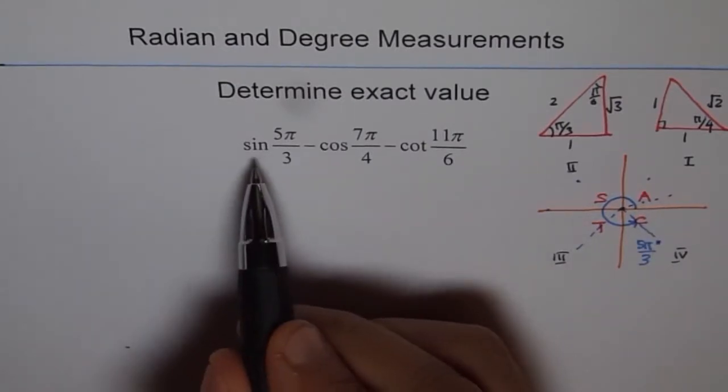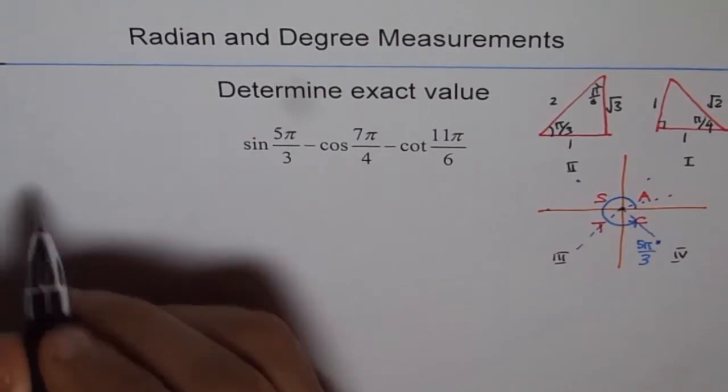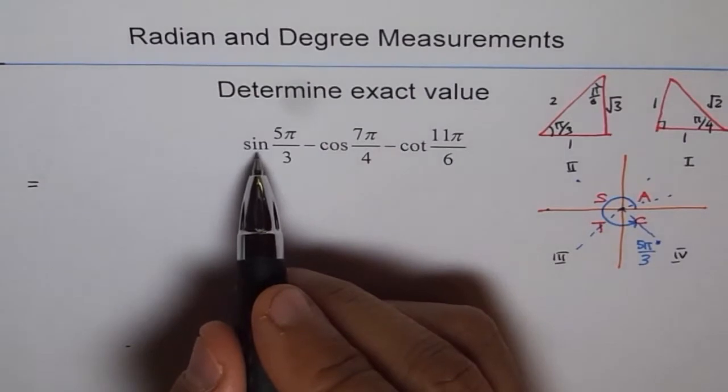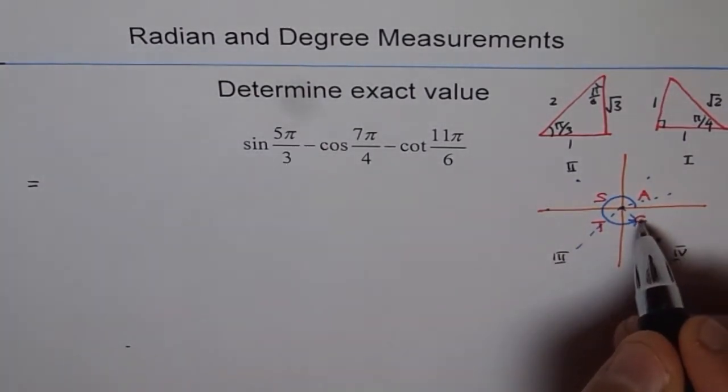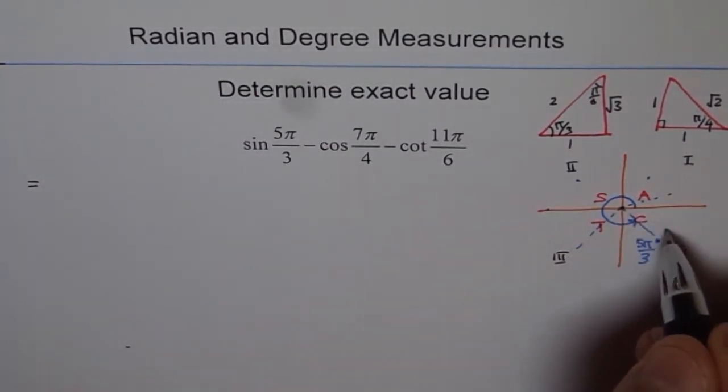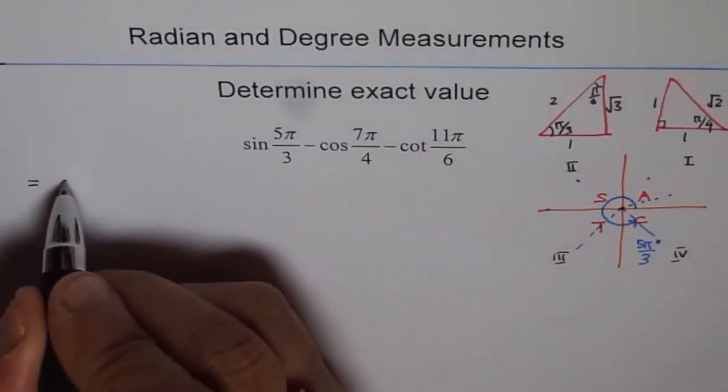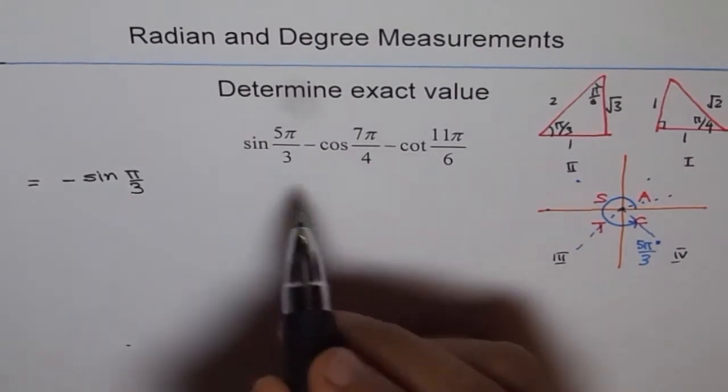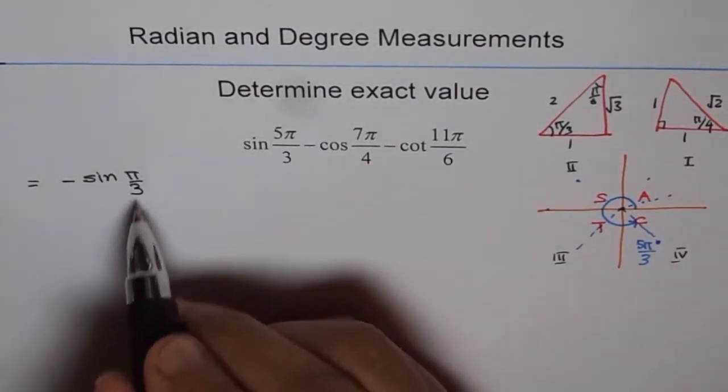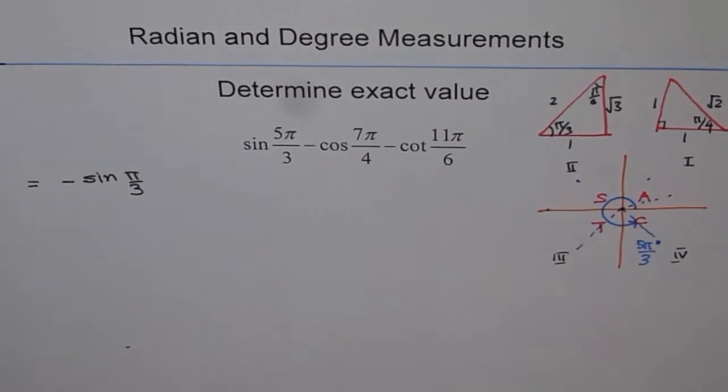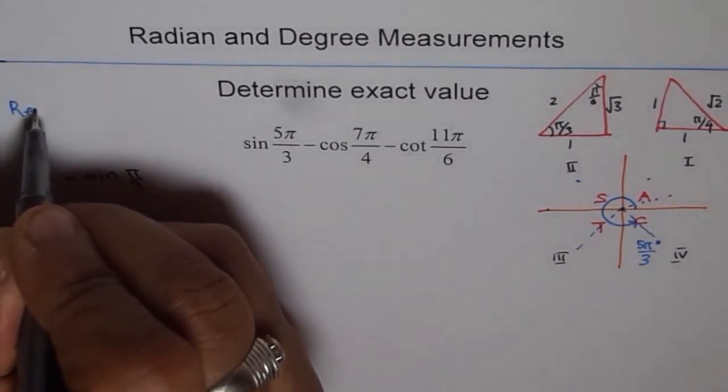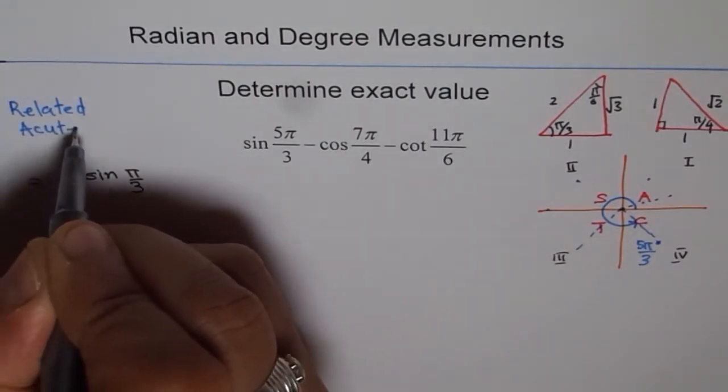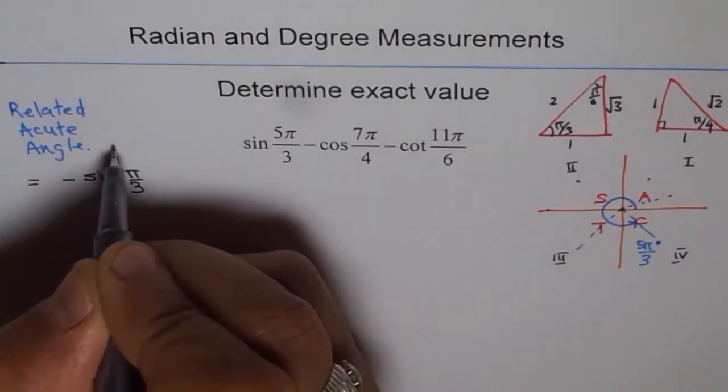Therefore, I can write sine 5π/3 as sine π/3 with a negative sine because it lands into quadrant 4. So I'll write this as minus sine π/3 since related acute angle is π/3.